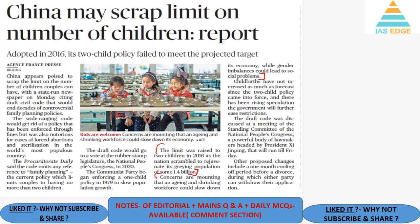The next article is about family planning in China. China had a one-child policy, which was replaced by the two-child policy in 2016. However, the two-child policy failed to meet projected targets. China's population of about 1.4 billion is facing an aging scenario, with concerns that an aging and shrinking workforce could slow down its economy, and gender imbalance could lead to social problems.